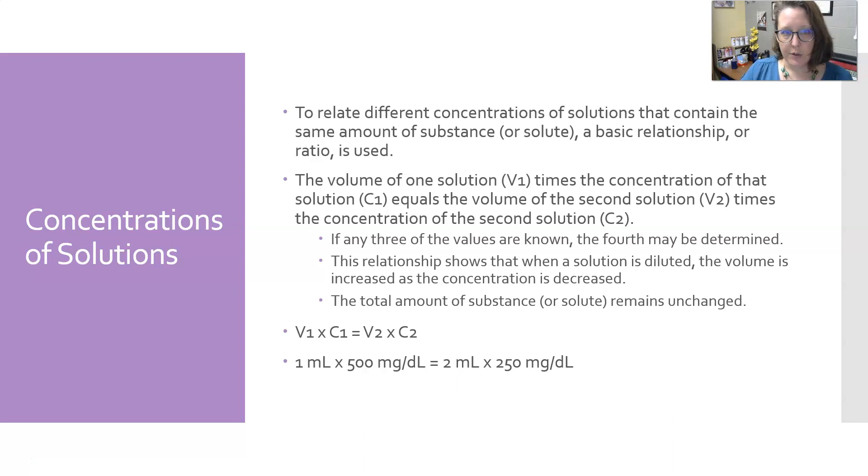The concentration of solutions: to relate different concentrations of solutions that contain the same amount of a substance or solute, a basic relationship or ratio is used. This is the relationship: the volume of one solution (V1) times the concentration of that solution (C1) equals the volume of the second solution (V2) times the concentration of the second solution (C2). Once you set that up as a formula, if you know any three of the values, you can figure out the fourth one. This relationship shows that when a solution is diluted, the volume is increased as the concentration is decreased, but the total amount of substance remains unchanged.